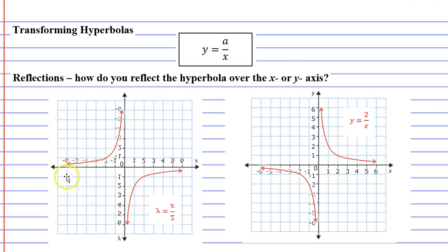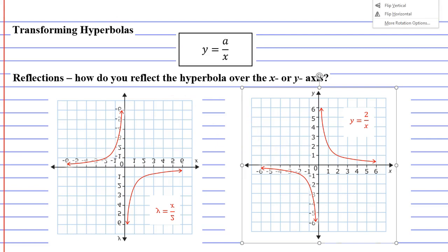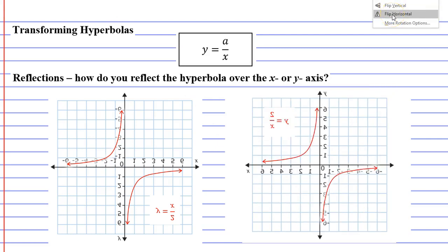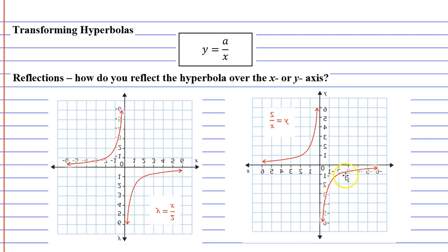After flipping vertically, the branch that was at the bottom left has flipped and is now at the top left, and the branch at the top right is now at the bottom right. After the horizontal flip — the same as reflecting over the y-axis — the branch at the top right is now at the top left, and the branch at the bottom left is now at the bottom right. When you look at both images, they look exactly the same — so reflecting over the x or y-axis gives the same result.